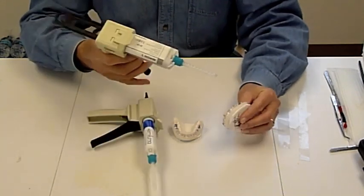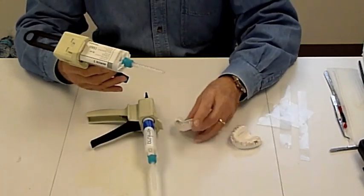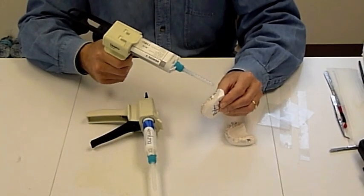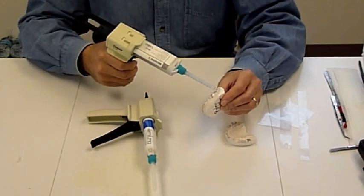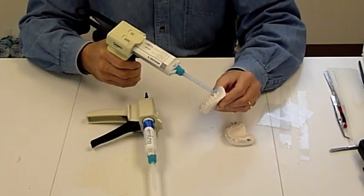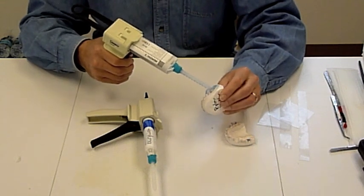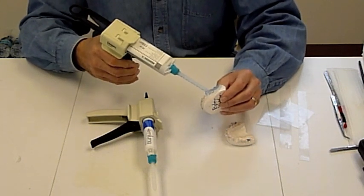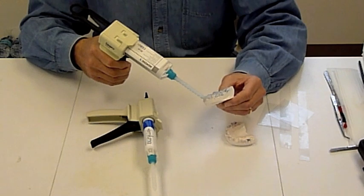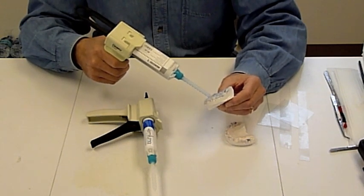We'll use the memosil to cover the occlusal surface and the rest of the buccal, creating the bulk of the tray and our positive occlusal stops.